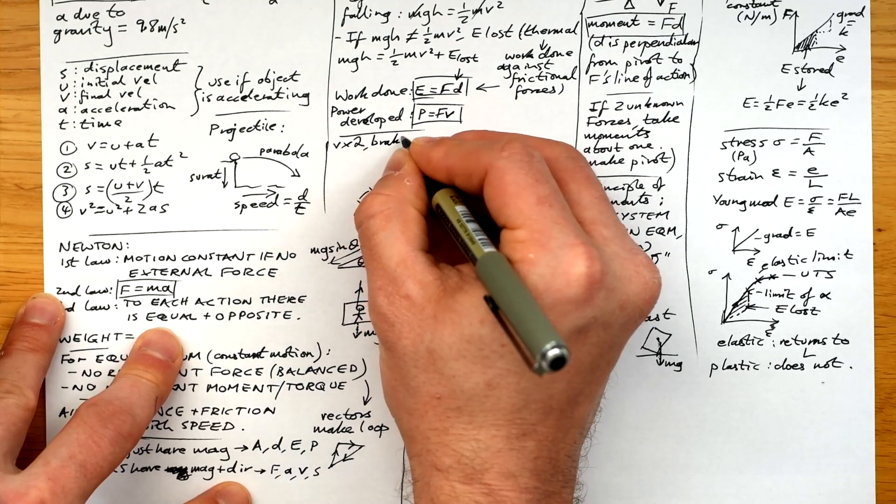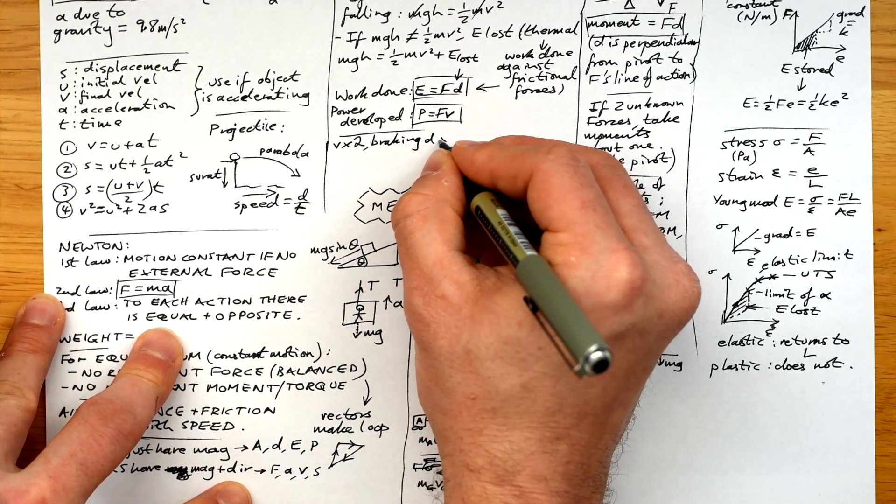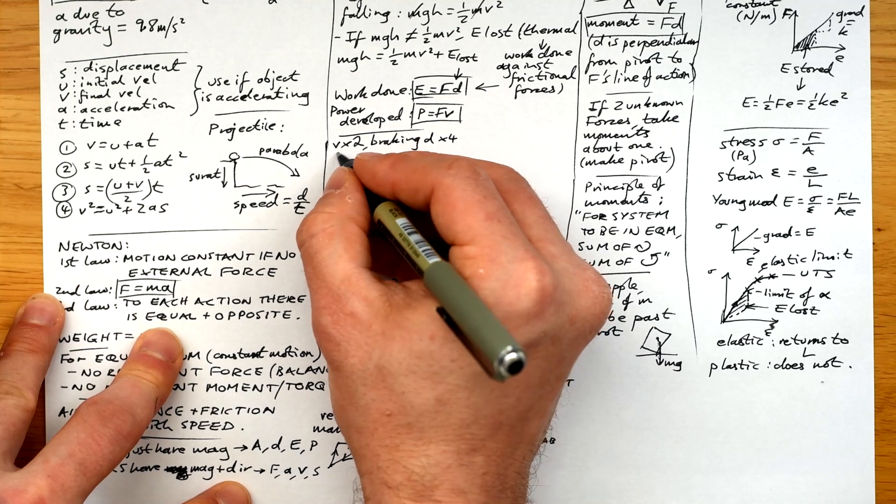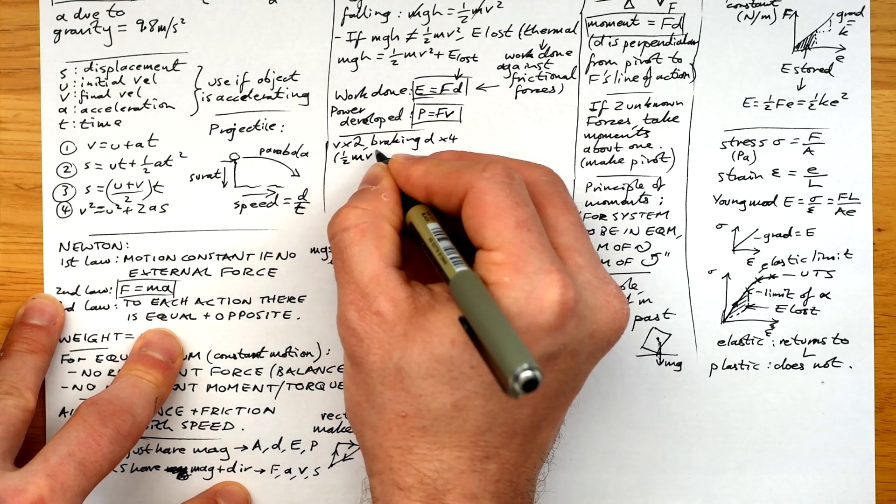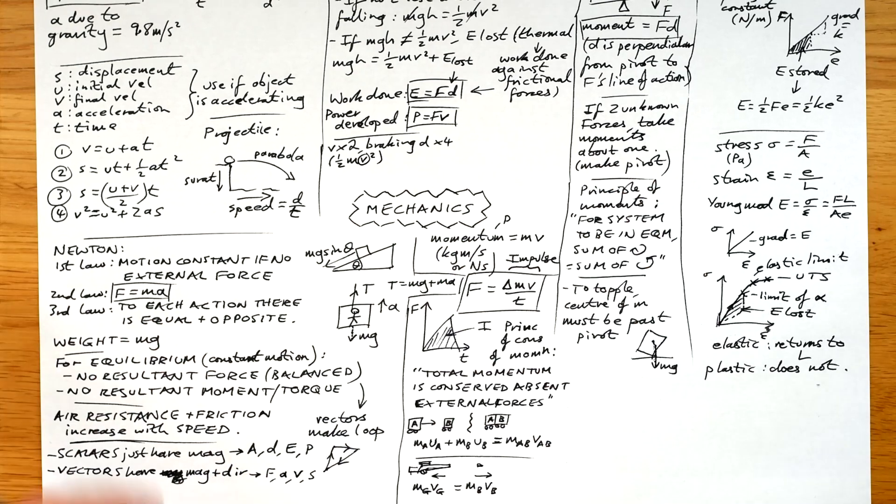Let's think about braking distance. Braking distance quadruples if you double your speed because kinetic energy is half mv squared. So if you double your v, then you have four times the kinetic energy. Other things that can affect braking distance are the road condition, weather and tire condition. What about thinking distance? Speed again, drugs, distractions and tiredness.